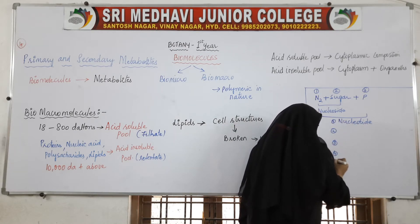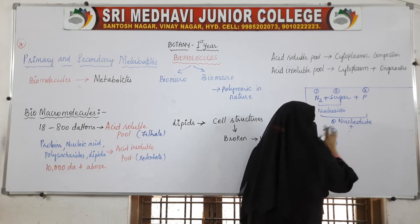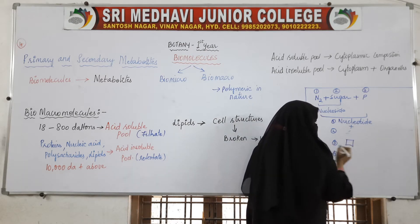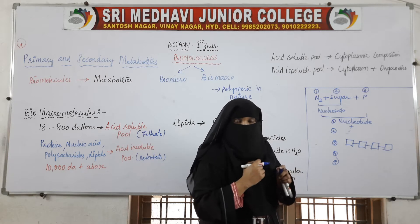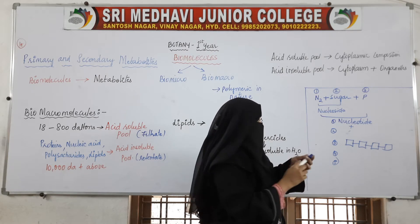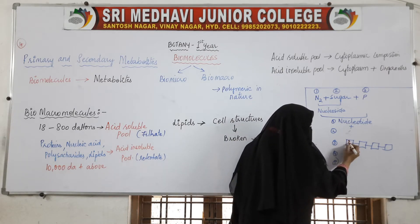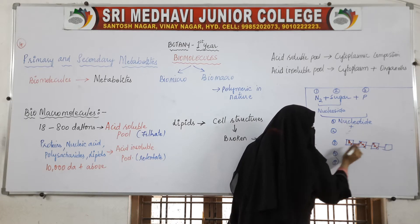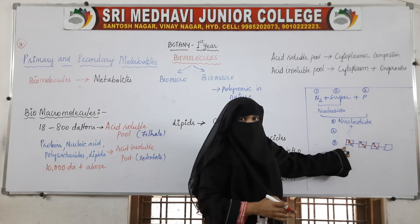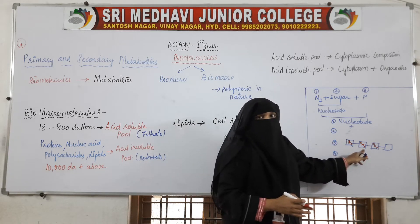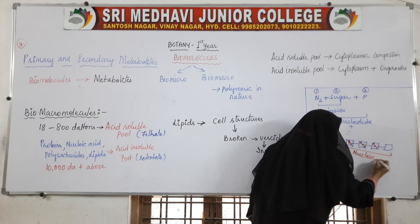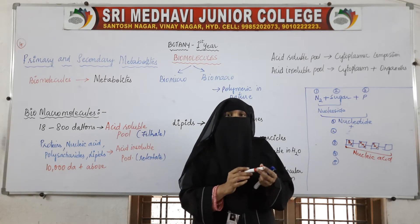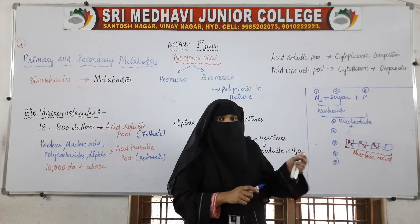Nucleotides combine one after another to form a long chain. Each nucleotide consists of sugar, nitrogenous base, and phosphate. When one nucleotide is joined with another, a chain of nucleotides is formed, and this chain of nucleotides is called nucleic acid.